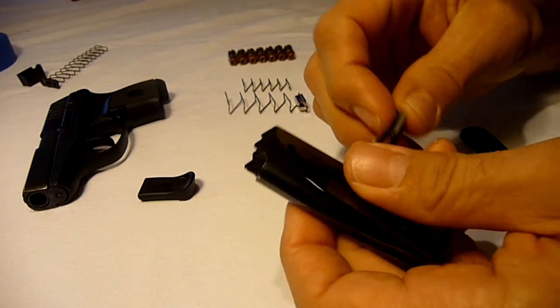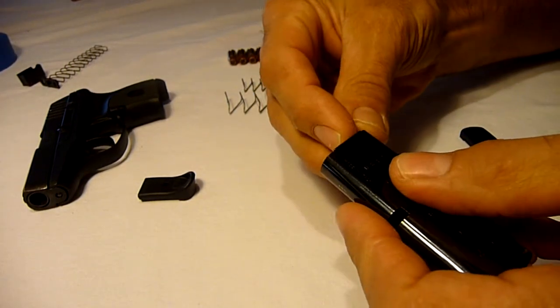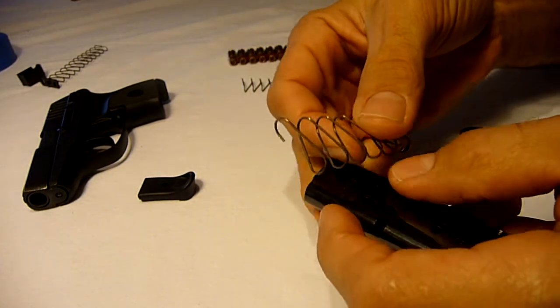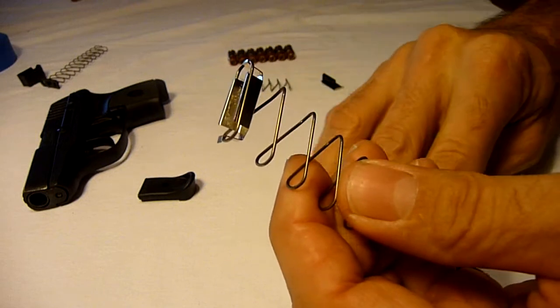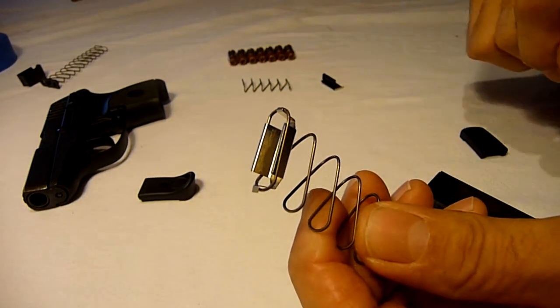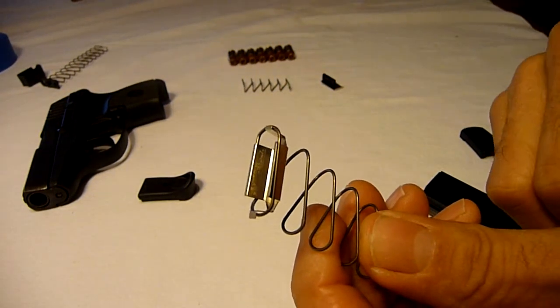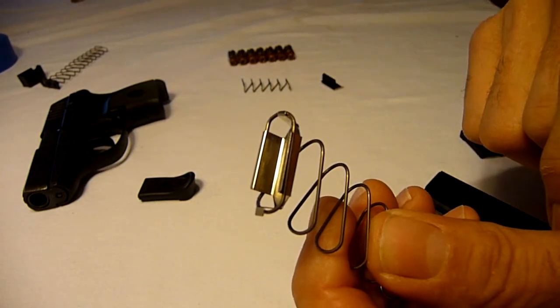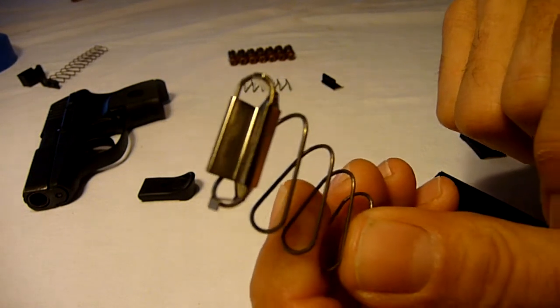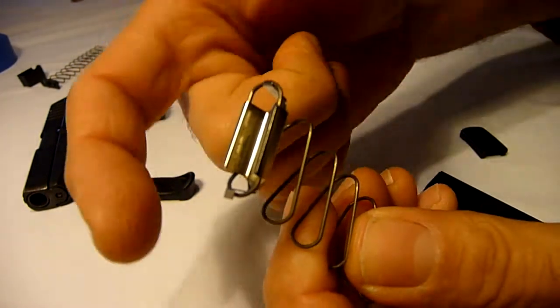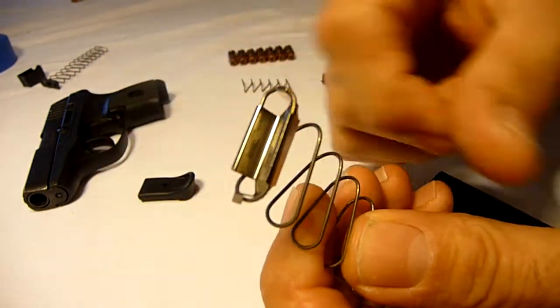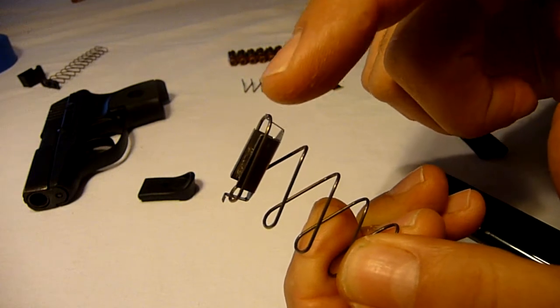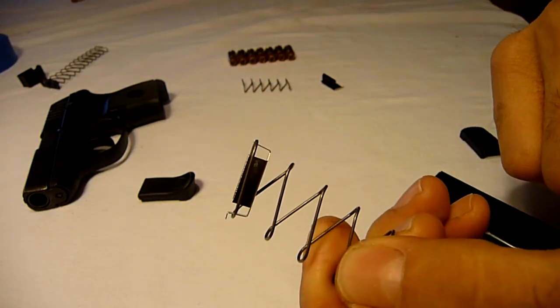Insert the new follower into the base of the magazine followed by the large spring. Now the connecting cup is probably already installed in the large spring when you take it out of the package. Just make sure that the small flange is located toward the end of the spring. You see on the connecting cup there's a small flange and a larger flange. Make sure that small flange is located toward the end of the spring.